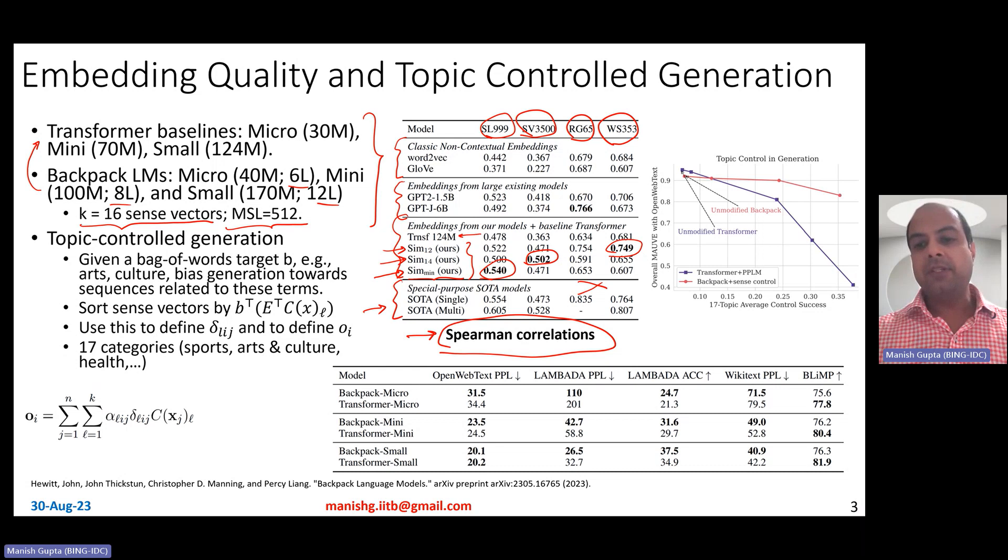Now further, if you compute the perplexity using these kinds of backpack models and compare them with Transformer models across different data sets, you observe that the backpack kind of models give you lower similarity across different benchmarks. In some of those cases, this perplexity can be really low compared to the Transformer-based models.